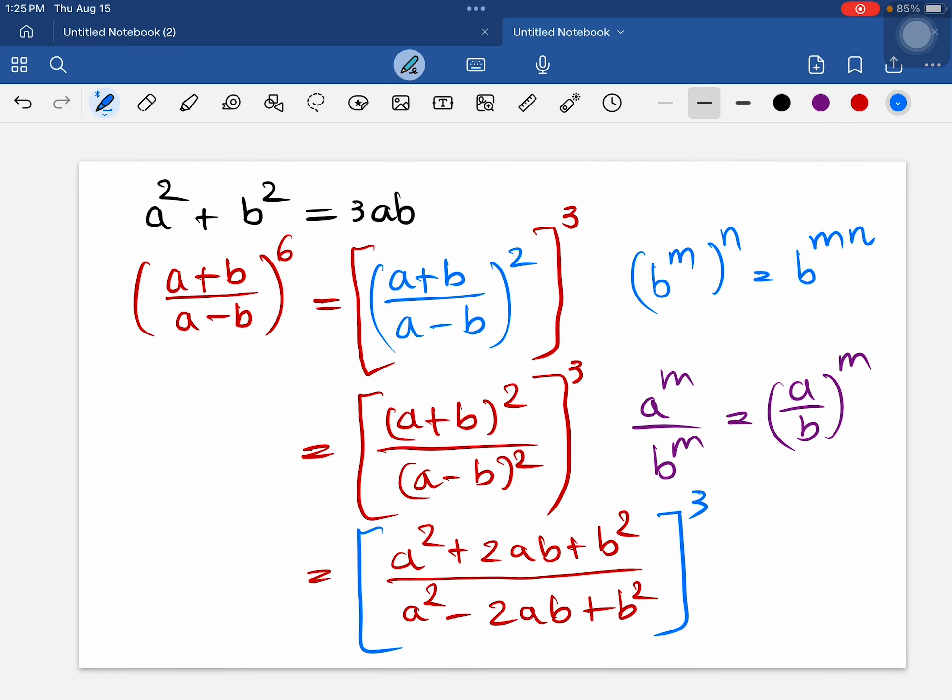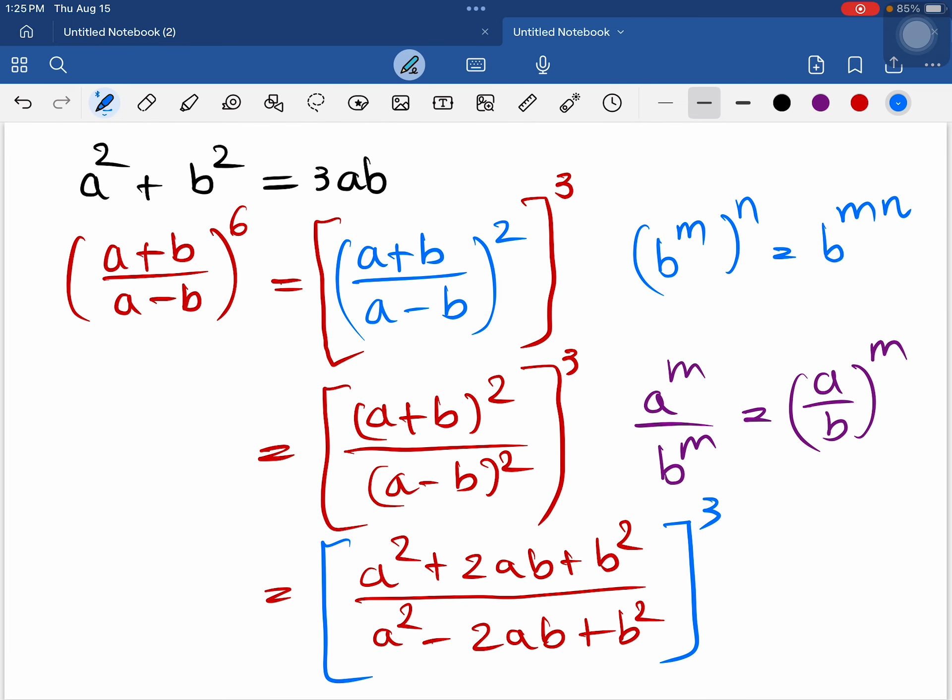Next step, we can substitute a squared plus b squared right here with 3ab. And another a squared plus b squared, we can substitute with 3ab. So, 3ab plus 2ab divided by 3ab minus 2ab.